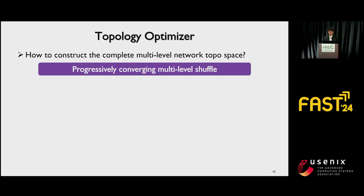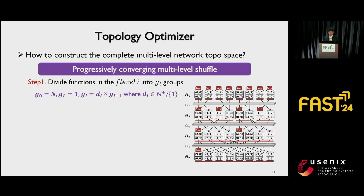For the topology optimizer, the key challenge is how to construct the complete multi-level network topology space. We propose progressively converging multi-level shuffle to address this challenge. We divide functions in function level I into GI groups. Suppose the number of functions is N, the number of communication levels is L; then G0 equals N, GL equals 1, and GI equals DI times G(I+1), where DI is an integer greater than 1. The figure shows a three-level shuffle network where the number of functions is 8, the communication level is 3, and function levels 0, 1, 2, 3 are divided into 8, 4, 2, 1 groups respectively.